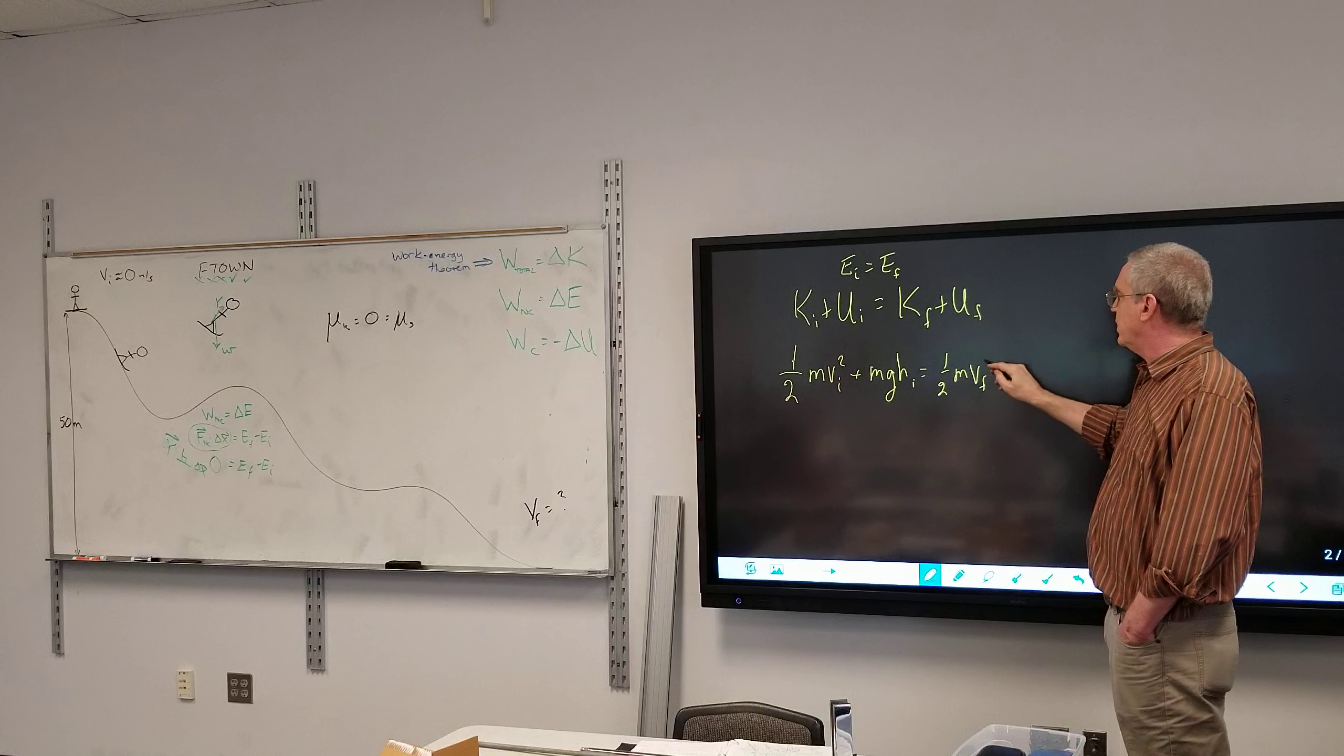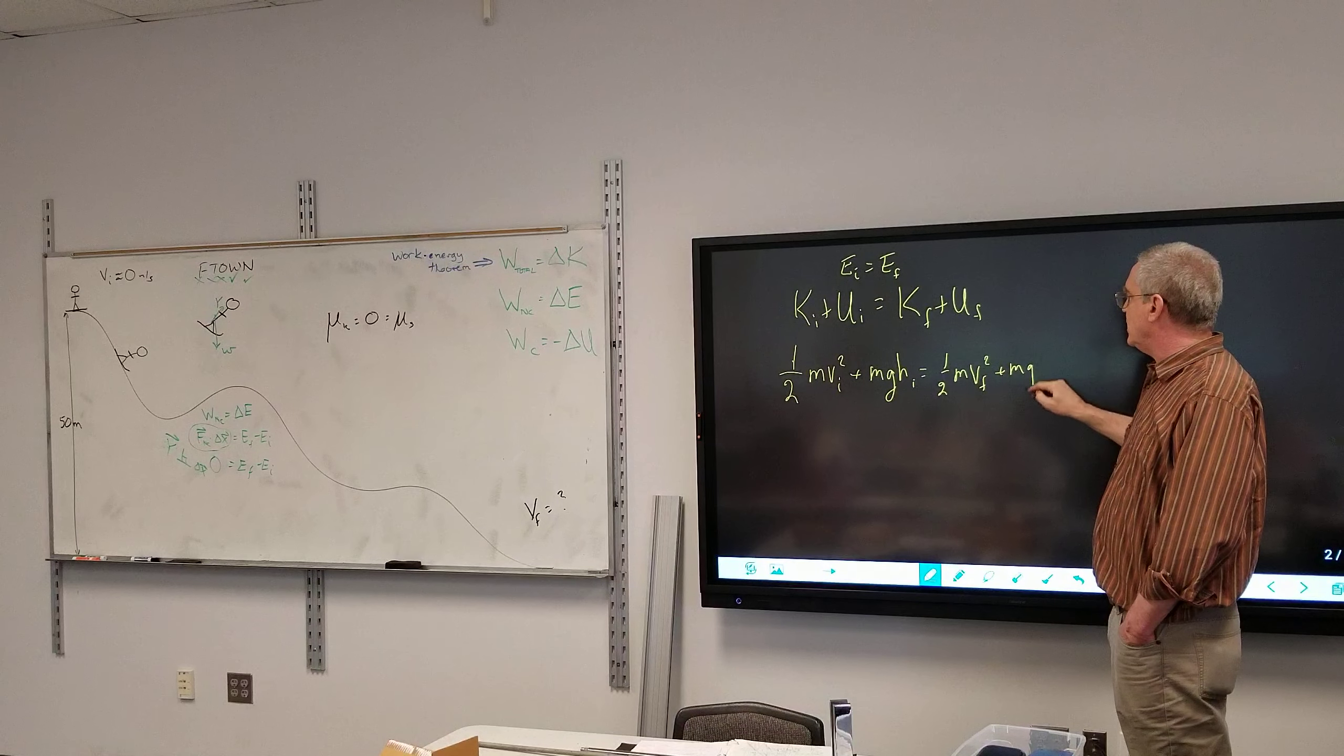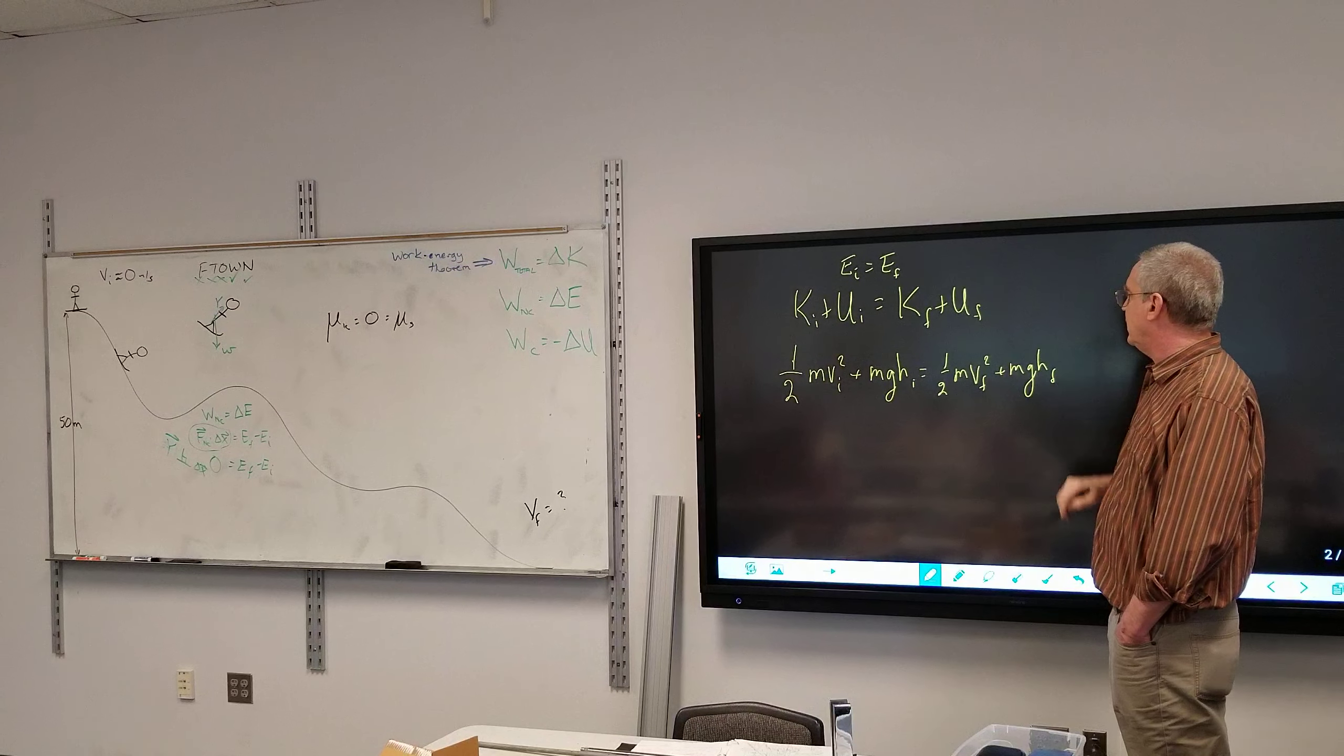GH initial, and it's equal to, well, the same stuff over here, except final. We're going to have mv final squared plus mgh final. All right, that's what we're trying to find right there.